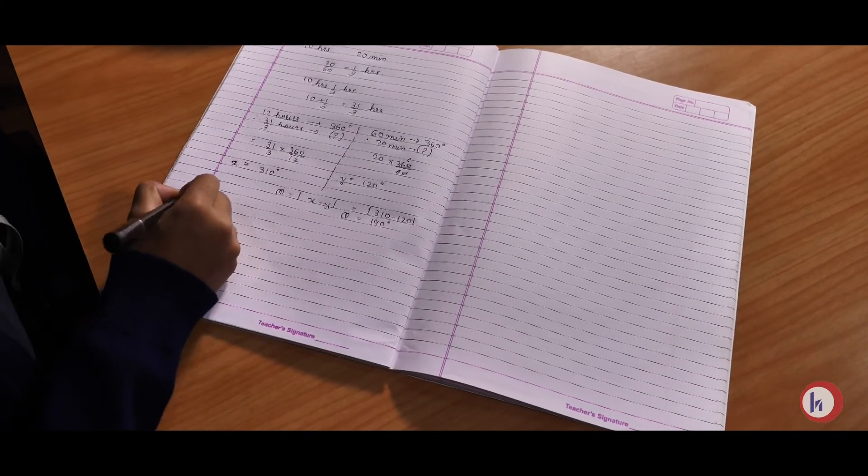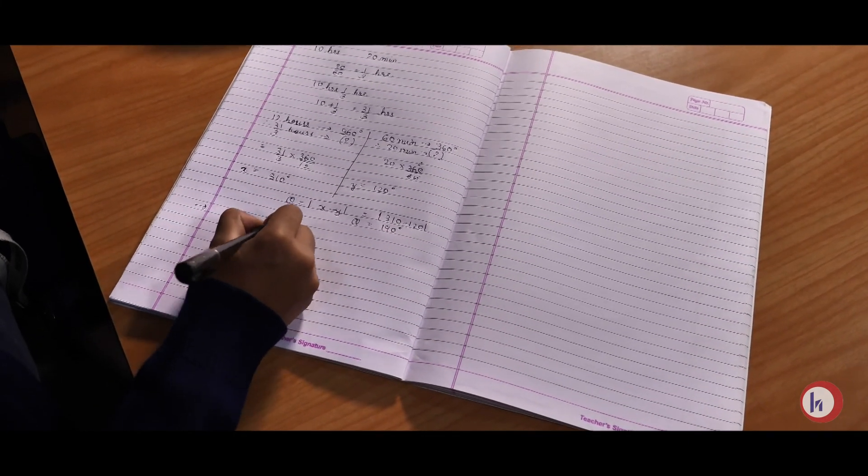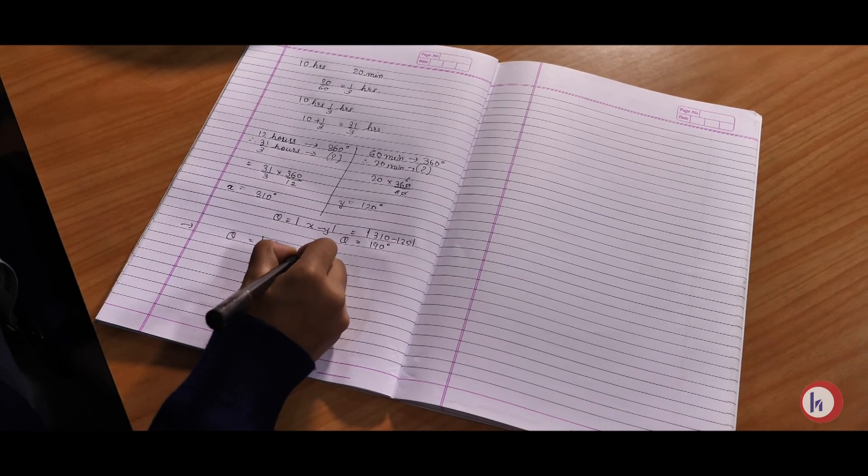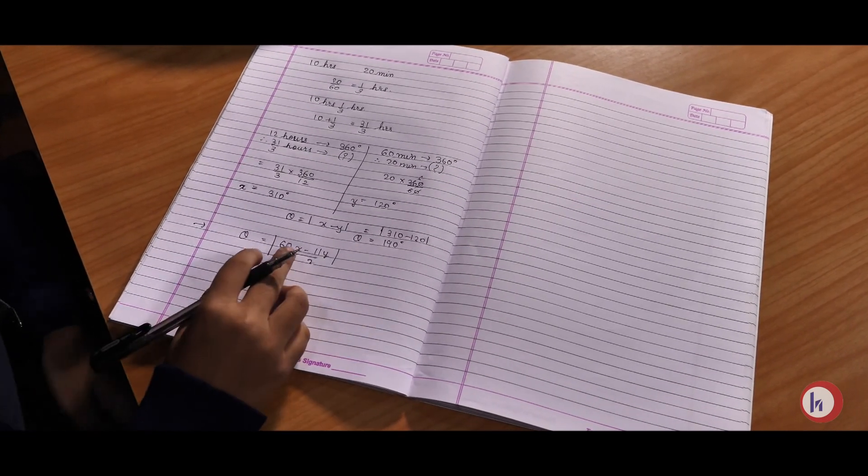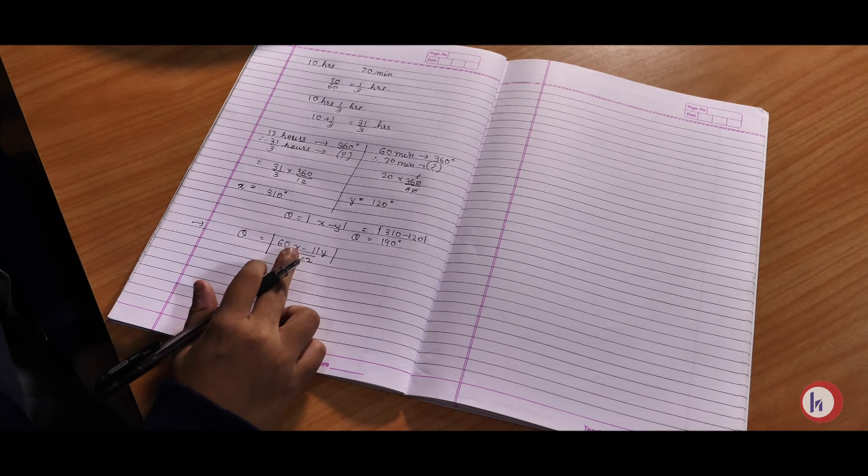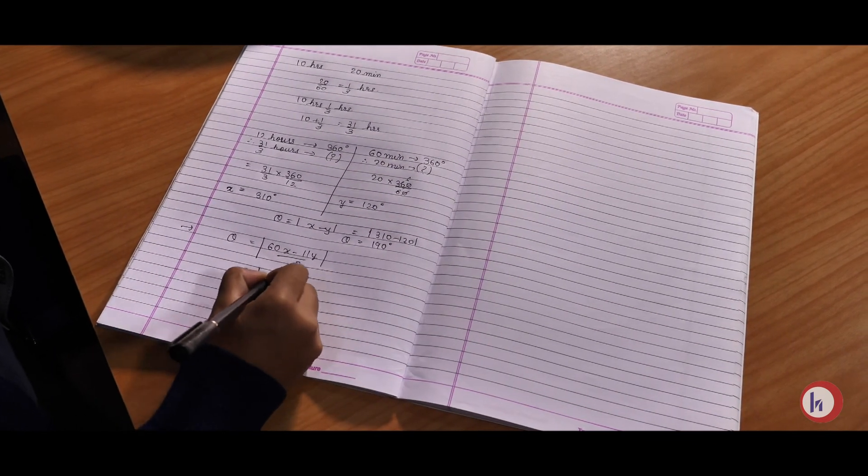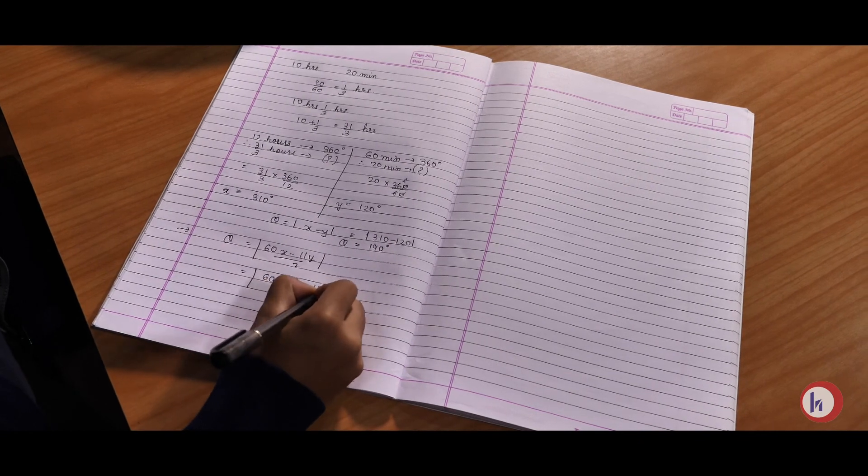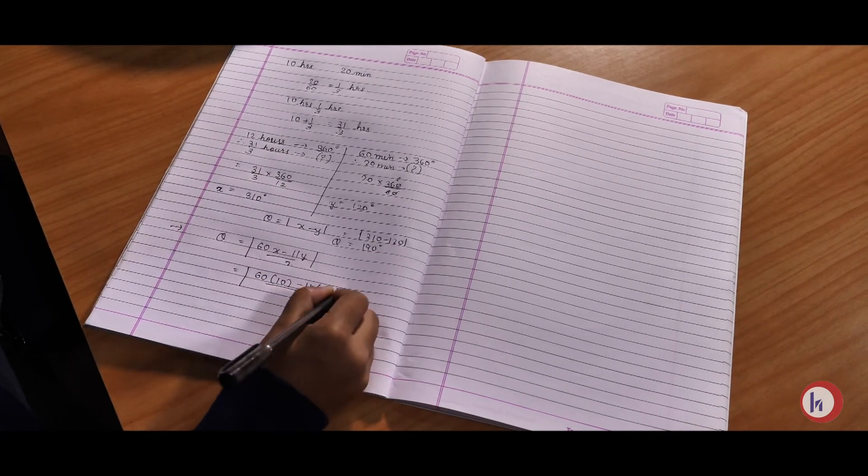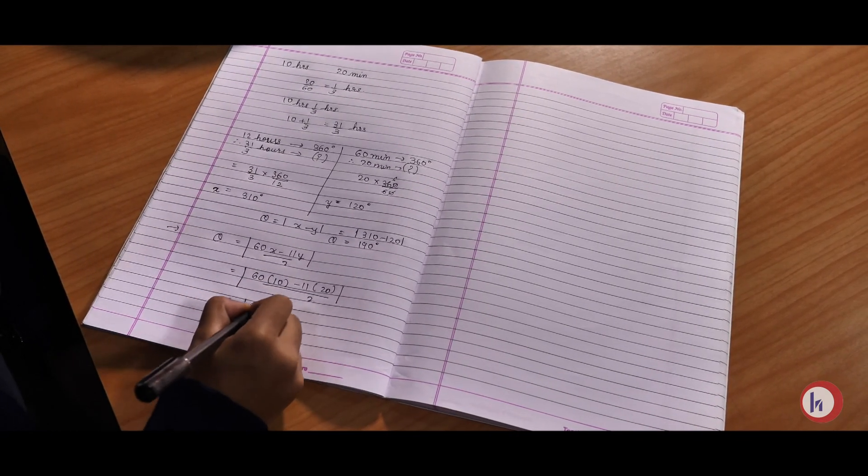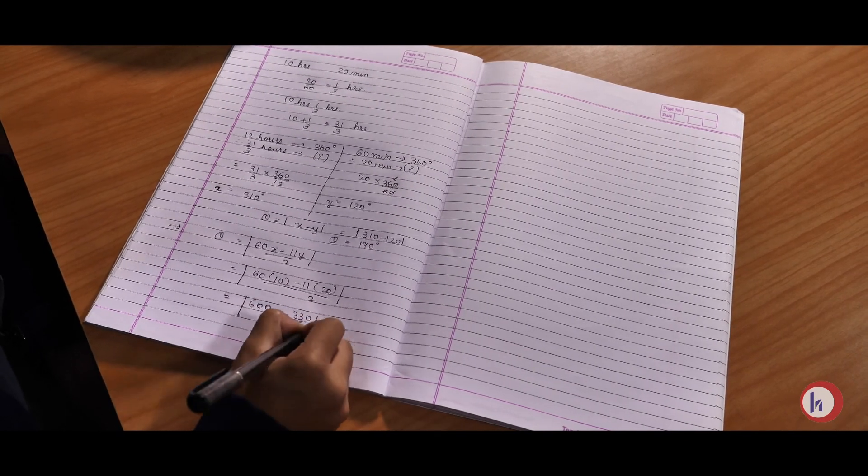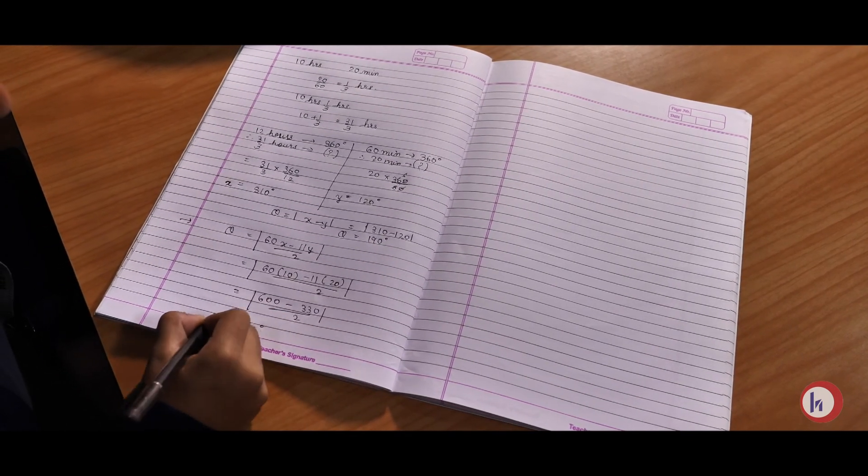Now we will consider short method. Theta equals to 60X minus 11Y upon 2. Here we have to place hours instead of X and minutes instead of Y. Therefore 60 into 10 minus 11 into 20 upon 2. It will become 600 minus 220 upon 2 equals to 190 degrees.